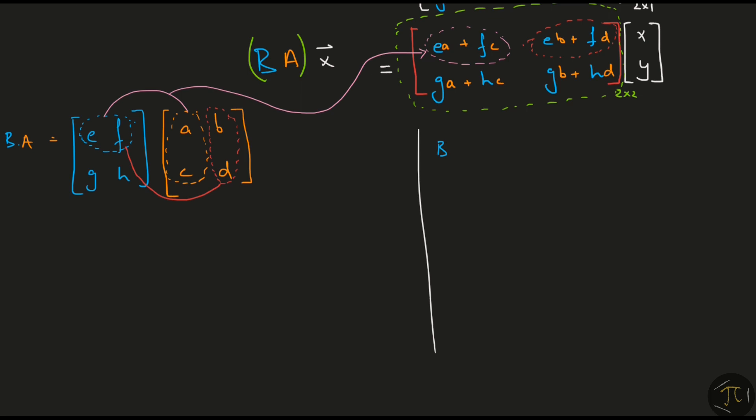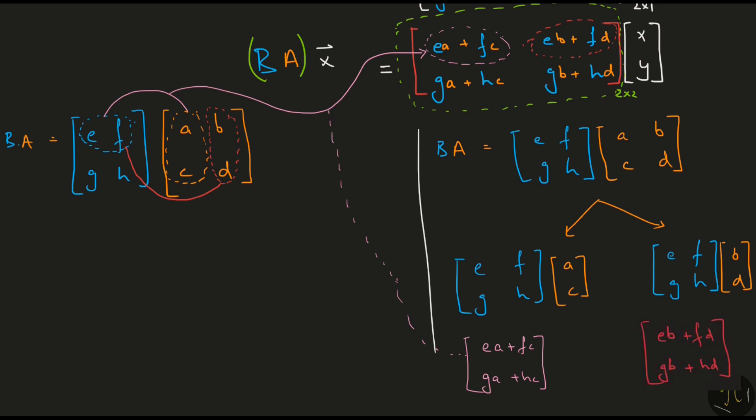But I find the other way a bit more interesting. So let's talk about that. Take the entire matrix B and multiply it with the first column of A. Similarly, take the entire matrix B again and multiply it with the second column of B. The first product here is nothing but the first column of the equivalent matrix. And the second product is nothing but the second column of the equivalent matrix. So each column of the equivalent matrix can be thought of as a matrix vector product in itself.